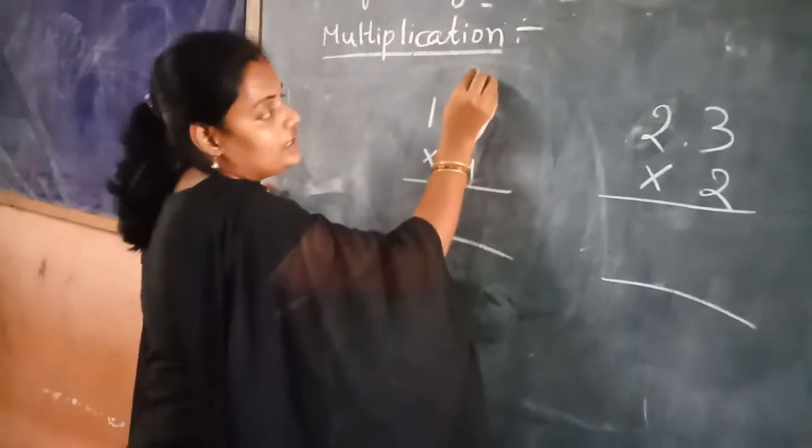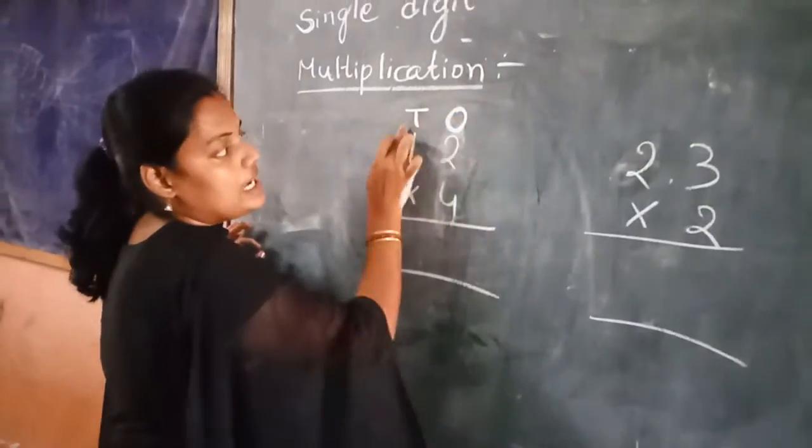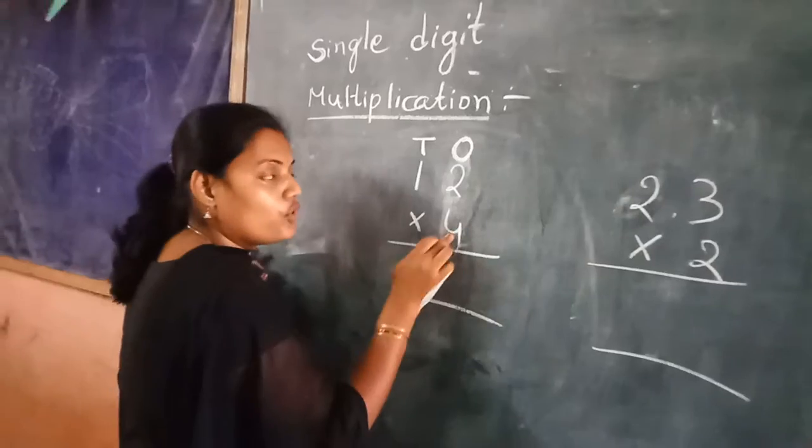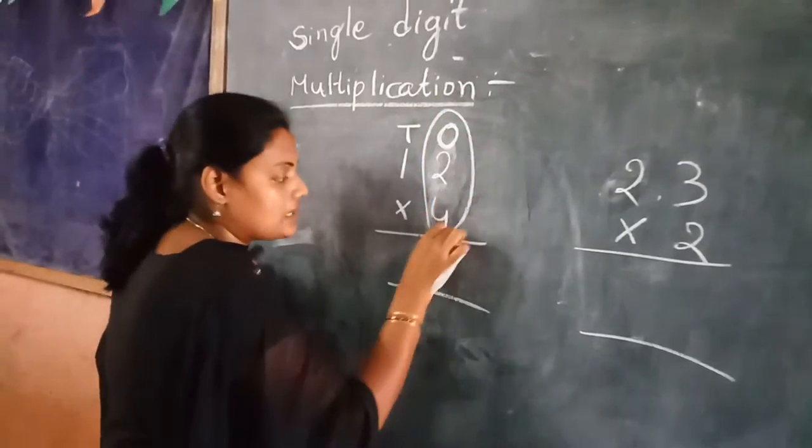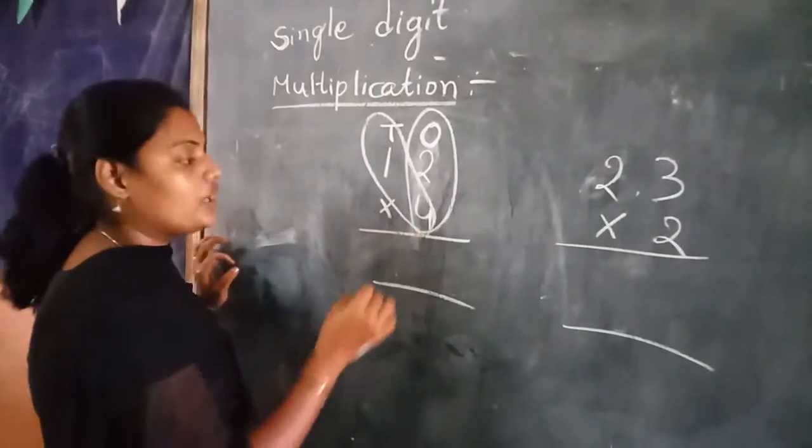First of all, you have to write the place values: 1's, 10's, 1's, 10's. First of all, multiply 4 with 1's place. After completing, multiply 4 with 10's place.